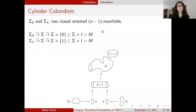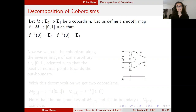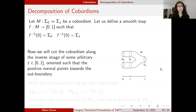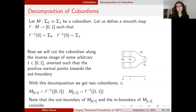Now I need to talk about decomposition. Let M be a cobordism. We define a map on M going to the unit interval, and we cut it along the preimage of some arbitrary t, call it sigma_t. We orient sigma_t such that the positive normal of sigma_t points towards the out-boundary. This gives us two cobordisms — one from 0 to t and another from t to 1 — with sigma_t serving as the out-boundary of the first and the in-boundary of the second.